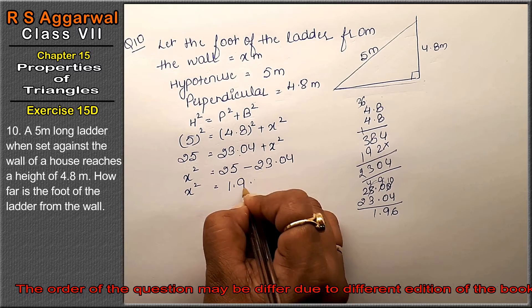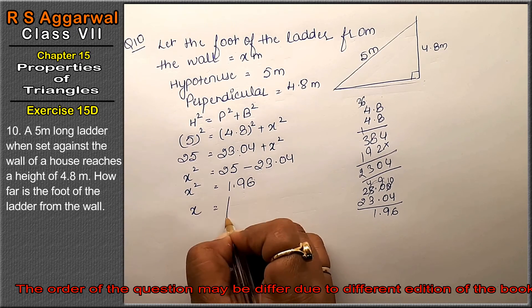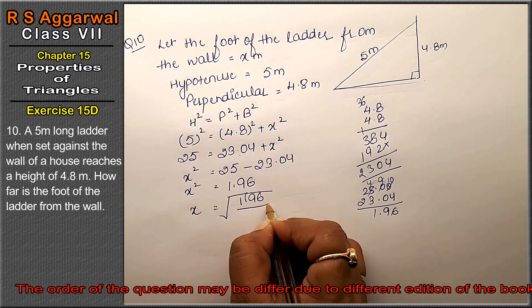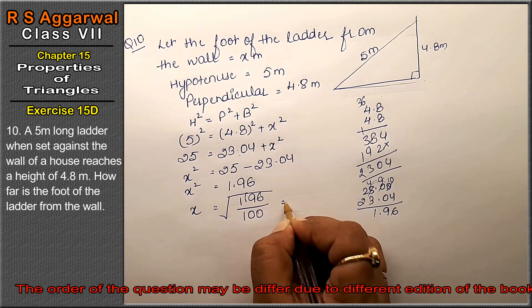So x's value is how much? Square root of 1.96. After removing the point, that's 100, so square root of 196.